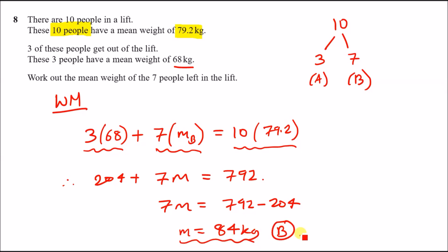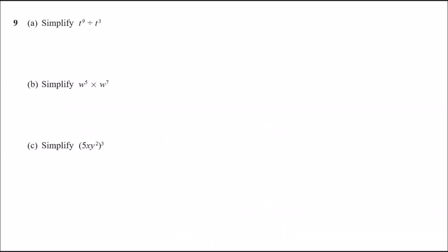Question 9 covers index laws. Part a: simplify t⁹ ÷ t³. When you divide, you subtract the powers: 9 minus 3 equals 6, so the answer is t⁶.